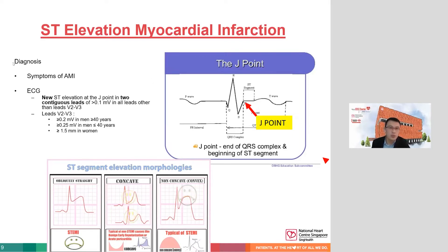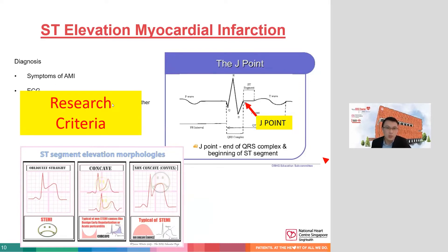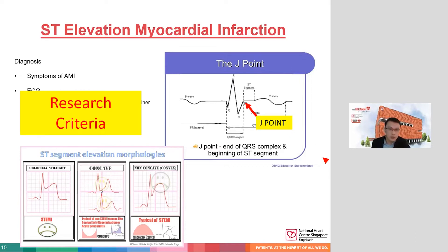Now, regarding the textbook criteria to diagnose ST elevation MI, I caution you that some ECG research terms are research criteria. Personally, I think symptoms of AMI and the suggestive ECG are the most important. The height of the ST segment is perhaps less useful. What I find more helpful is the morphology of the ST segment. A straight or convex pattern — think of a sad face — is very strongly suggestive of STEMI. On the other hand, a concave or smiley pattern tends to be more benign, consistent with early repolarization.